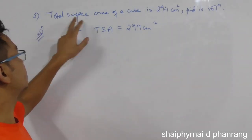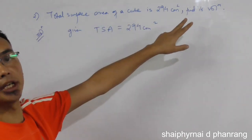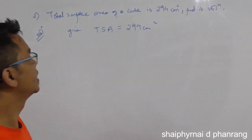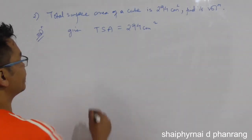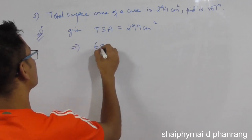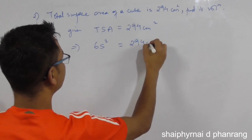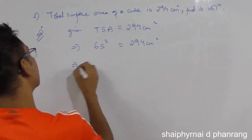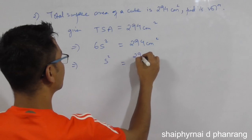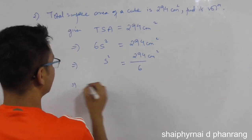The total surface area of a cube is 294 centimeters squared. So, the total surface area of a cube is 6s squared equals 294 centimeters squared. So s squared equals 294 centimeters squared divided by 6.